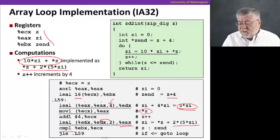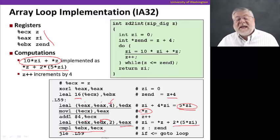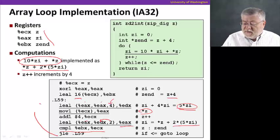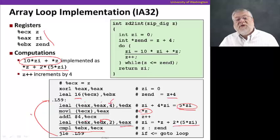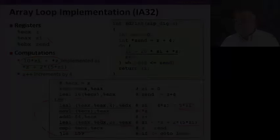We then do the test of the loop comparing whether we're at the last address. If we are, we continue on. If we're not, we loop back around to this label L59. That is the assembly code implementation of this.